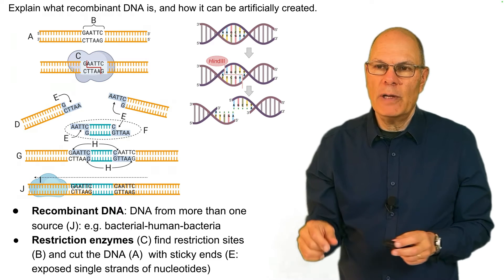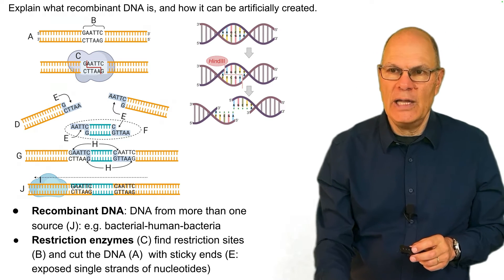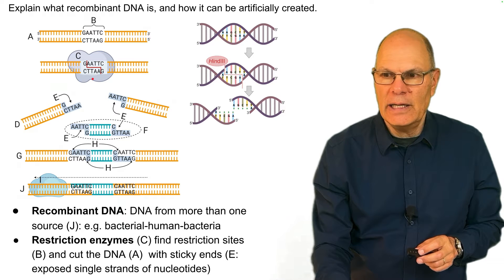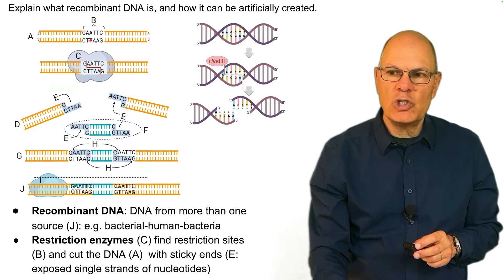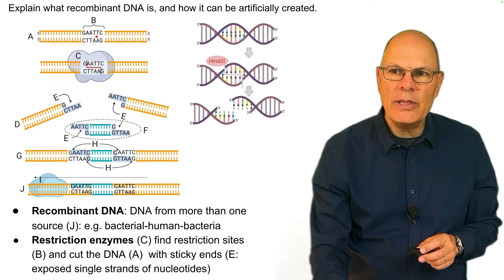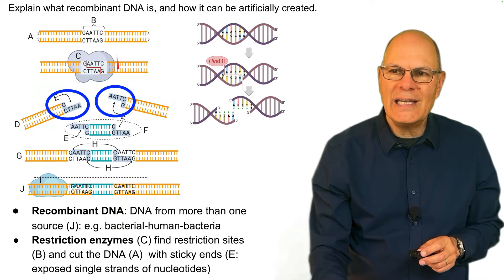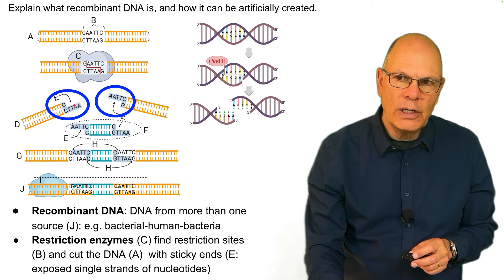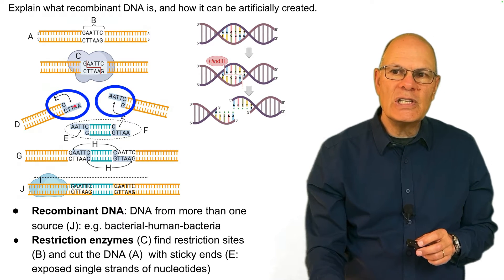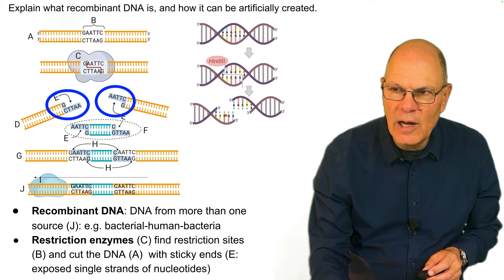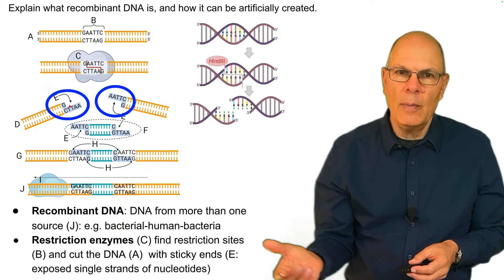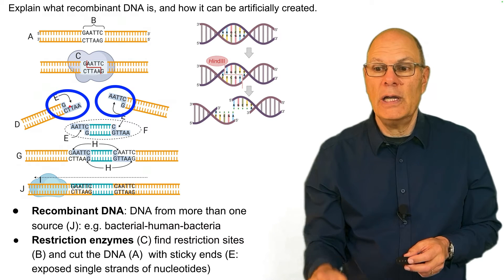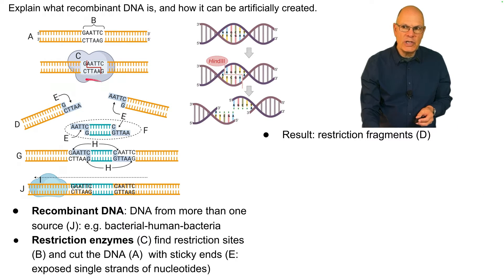The main tool in creating recombinant DNA is something called a restriction enzyme, shown here at letter C. Restriction enzymes find sequences of DNA called restriction sites, shown at B, and cut the DNA with sticky ends. Those sticky ends are exposed single strands of nucleotides, visible in the diagram showing the DNA double helix.